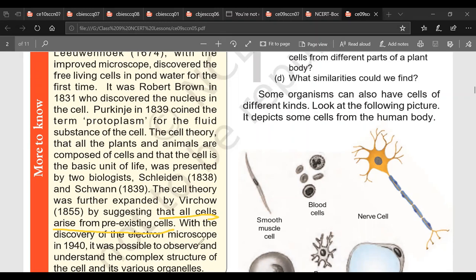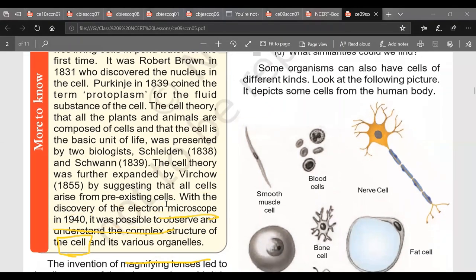Then with the discovery of electron microscope in 1940. Here also one more question can be asked, when was electron microscope observed? So electron microscope enabled us to understand complex structures and cells and various organelles. So this was all about discovery of cells.